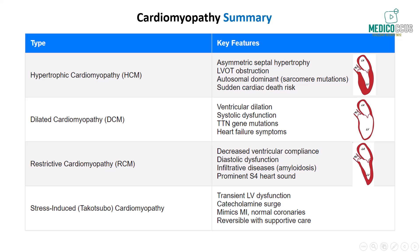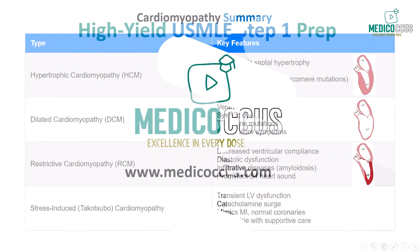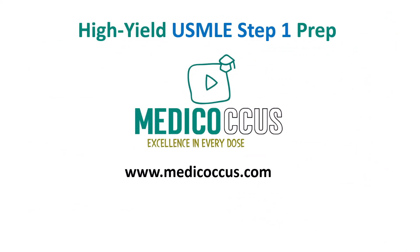Finally, stress-induced or takotsubo cardiomyopathy, also known as broken heart syndrome, involves transient left ventricular dysfunction, often triggered by a surge in catecholamines due to physical or emotional stress. This condition mimics a myocardial infarction but typically shows normal coronary arteries on angiography and is reversible with supportive care. By keeping these key features in mind, you'll be well-prepared to answer questions on cardiomyopathies in your Step 1 exam. Thank you for joining this episode of the Metaculus video series. Stay tuned for more high-yield discussions on topics that frequently appear in your NBME and USMLE exams.